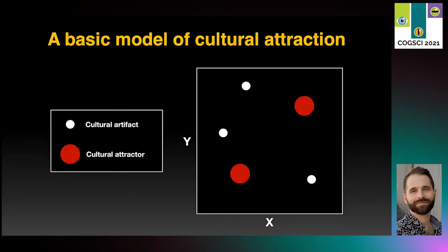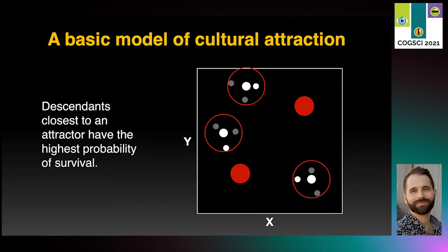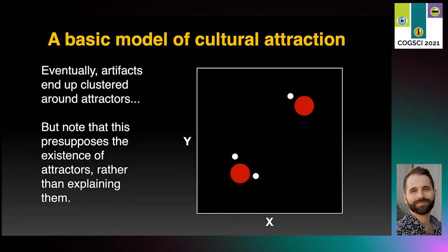A typical explanation of this effect might look something like this. The large red dots show cultural attractor points, and the white dots show individual artifacts. We can think of the X and Y axes as corresponding to any featural dimensions of the artifacts. Each artifact may generate some number of descendants within an error radius due to noise in the copying and transmission process. The descendants closest to the attractor points have a higher probability of being selected for reproduction in the next generation, and eventually artifacts end up clustered around the attractor points.